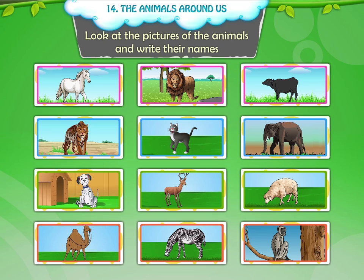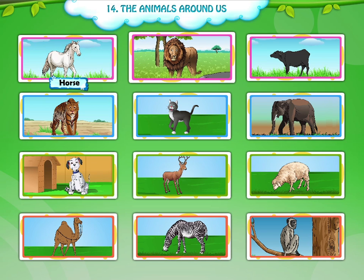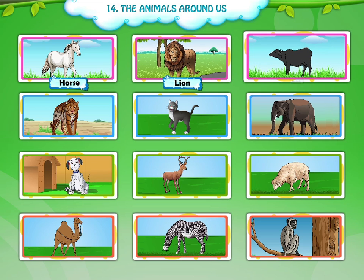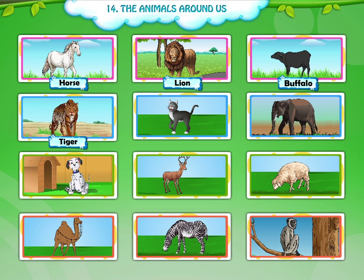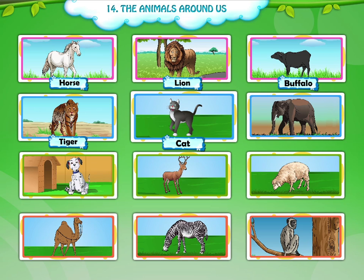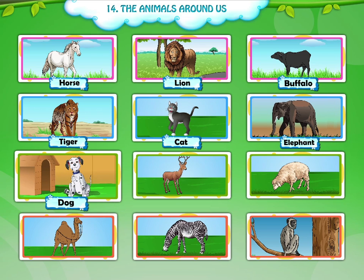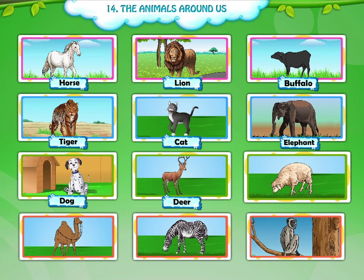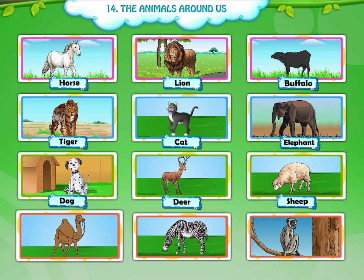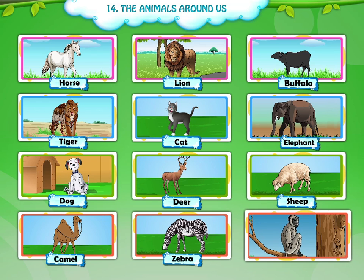Six — look at the pictures of the animals and write their names. Horse, lion, buffalo, tiger, cat, elephant, dog, deer, sheep, camel, zebra, monkey.